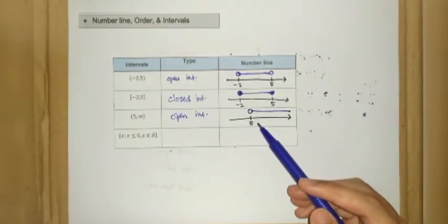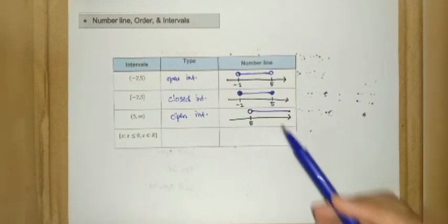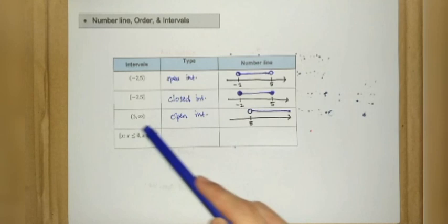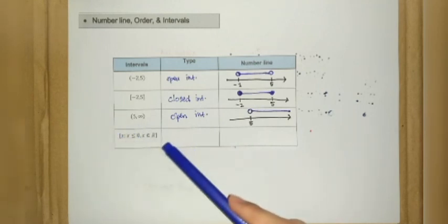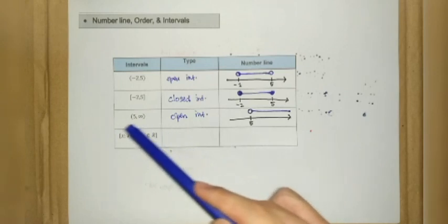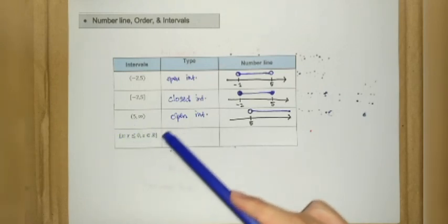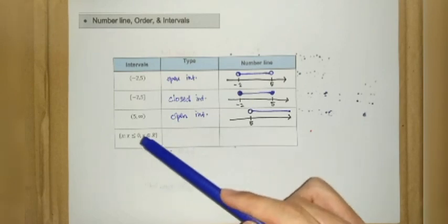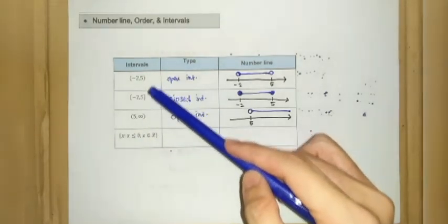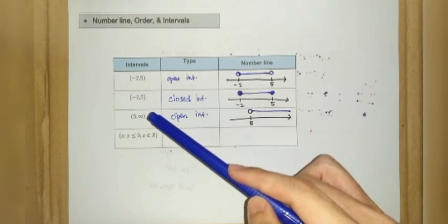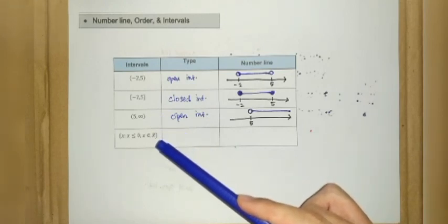It takes values like 5.1, 5.2, 5.3, and so on. The last example is written in what we call set notation, whereas the first three examples were written in interval notation.